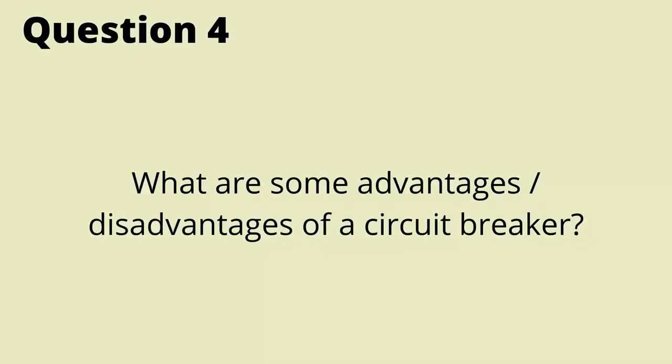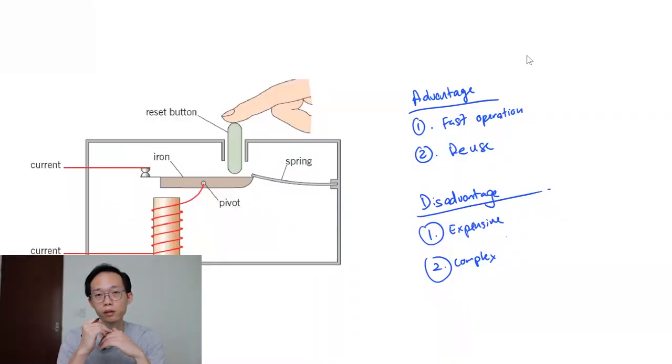Now what are the advantages of a circuit breaker with respect to a fuse? A fuse is another safety device that guards against the same two hazards of short circuits and overloaded circuits.